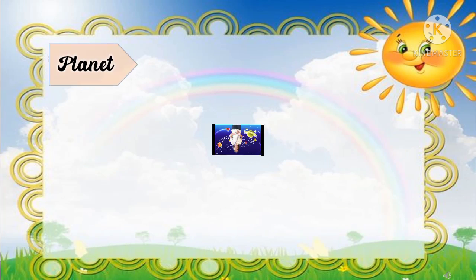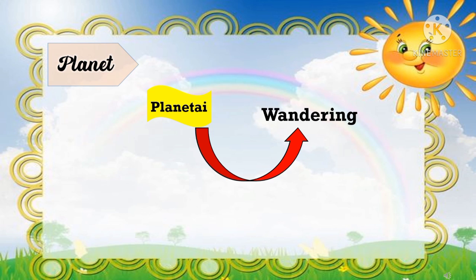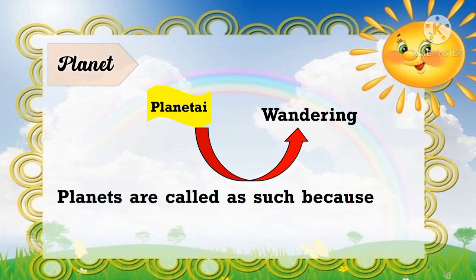Are you ready kids? Excellent! Now, brace yourself as we are going to take a quick tour of outer space. The word planet comes from the Greek word planetai, which means wandering. Planets are called as such because they are always moving.